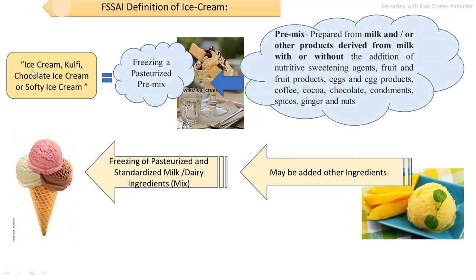Examples of real ice cream include kulfi, chocolate ice cream, and soft serve ice cream — these are real ice creams made from freezing of pasteurized premix. First, the premix is prepared, then it is pasteurized and frozen. This is called ice cream, and a number of other ingredients may be added as per requirement.